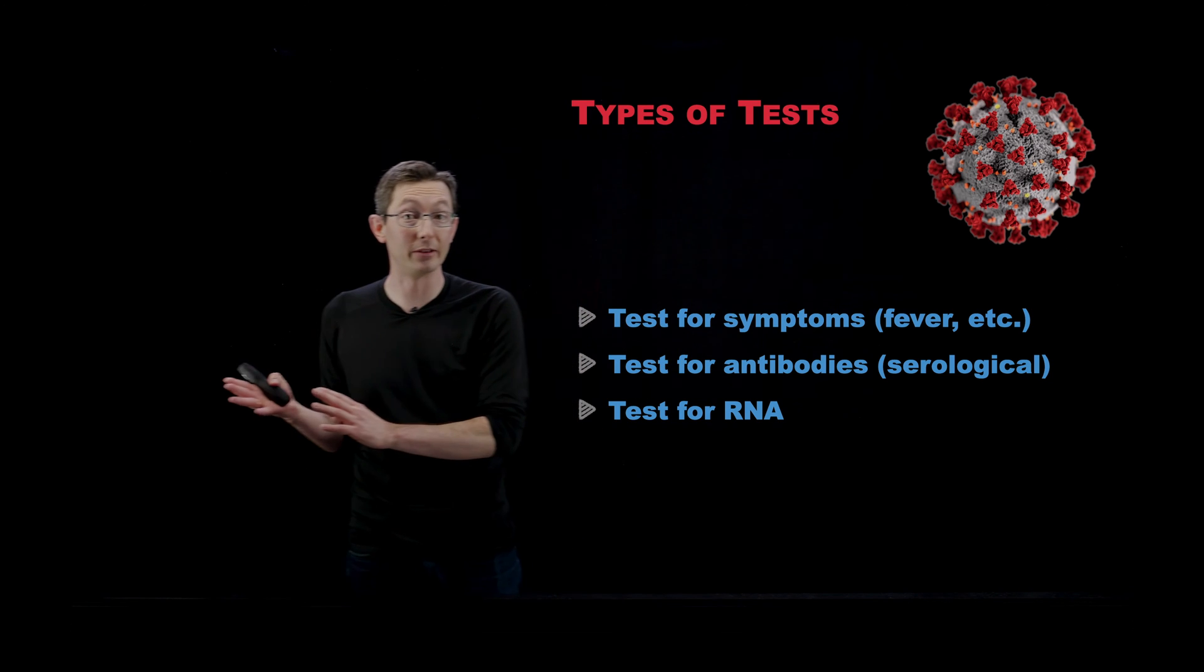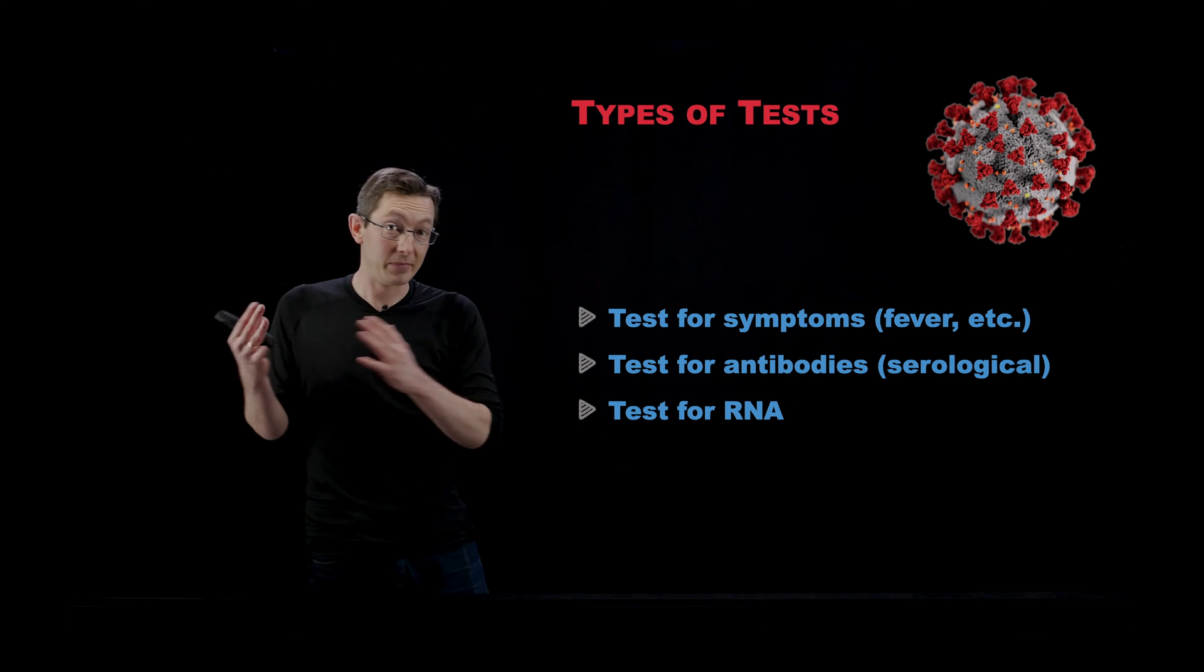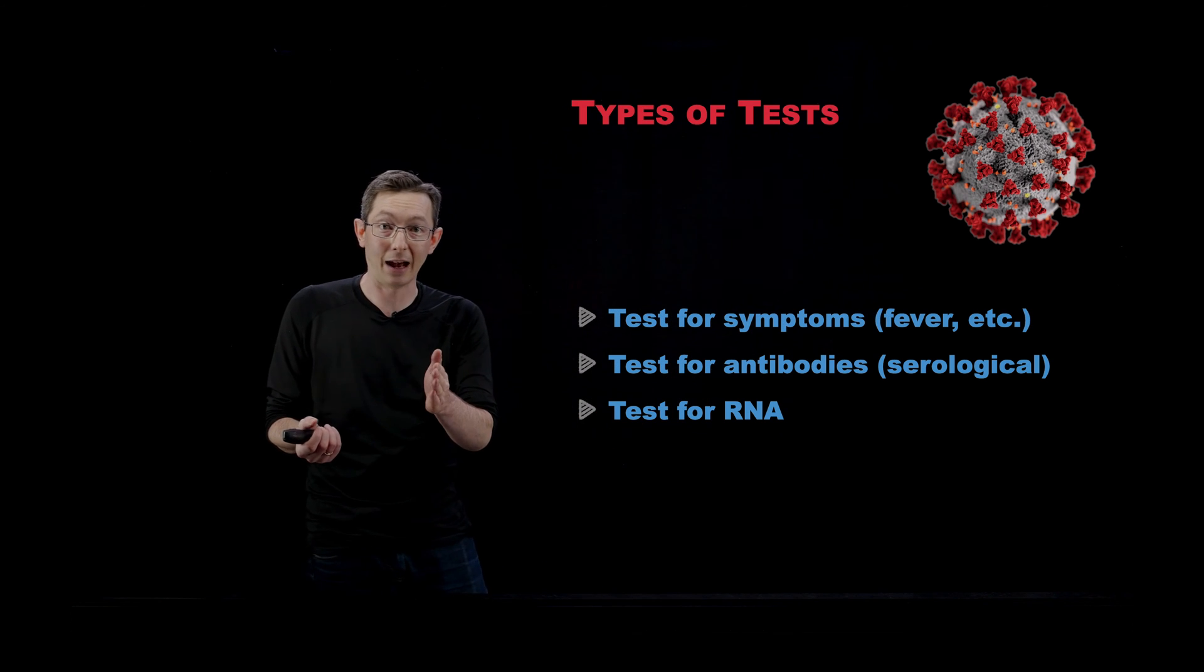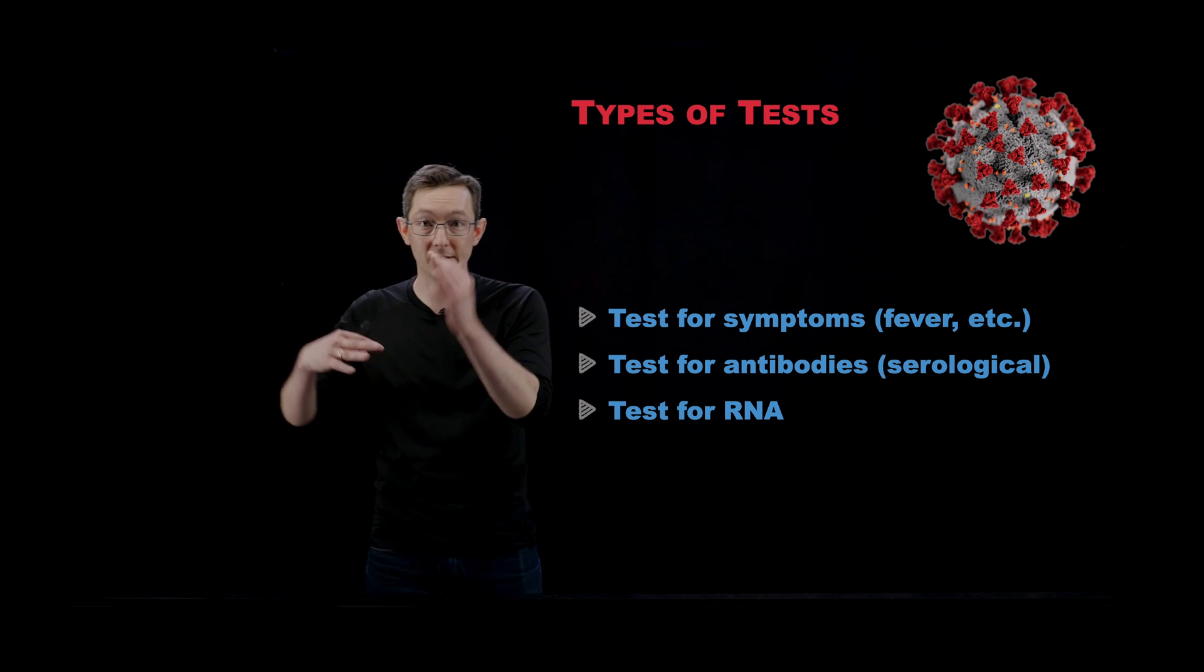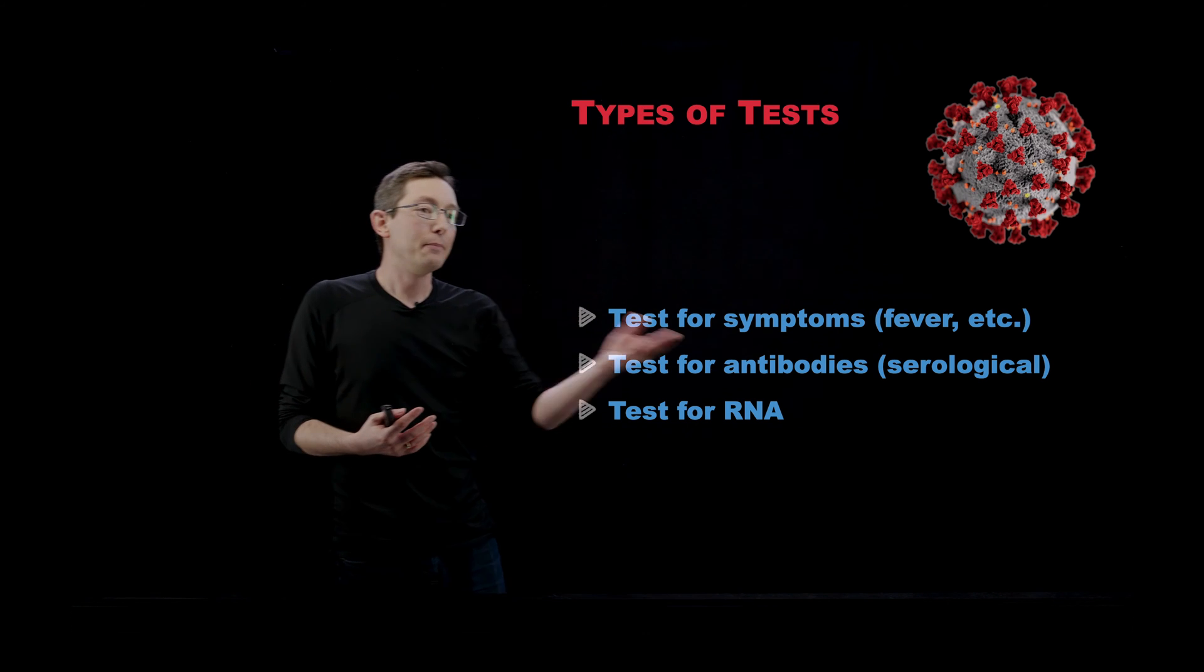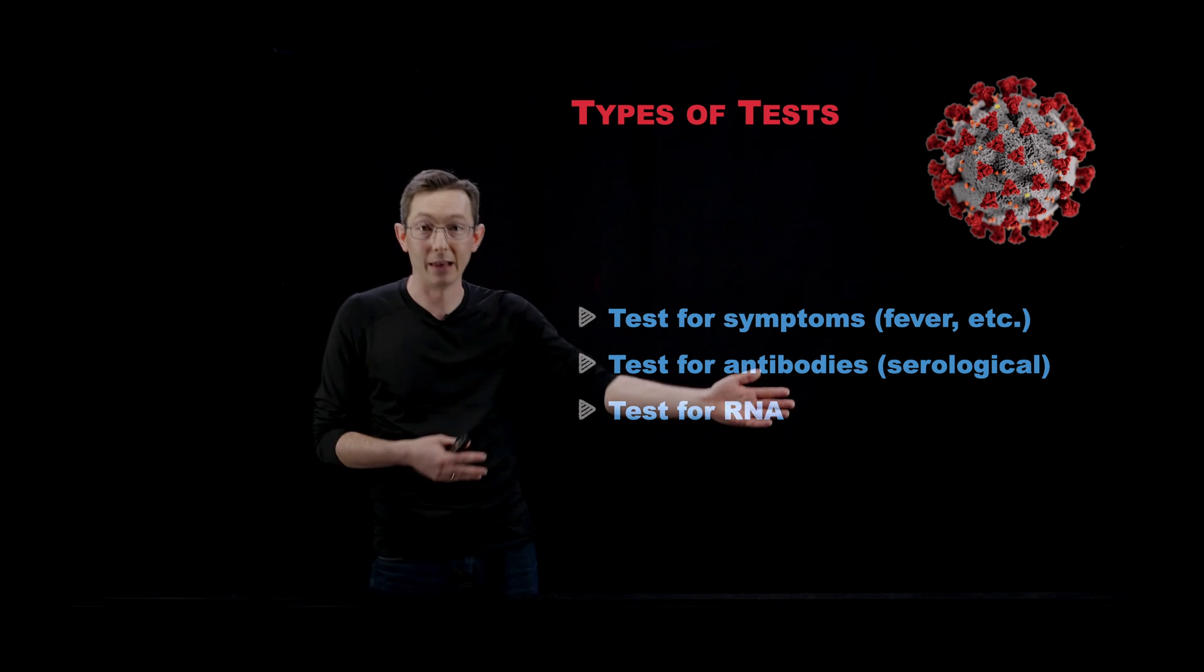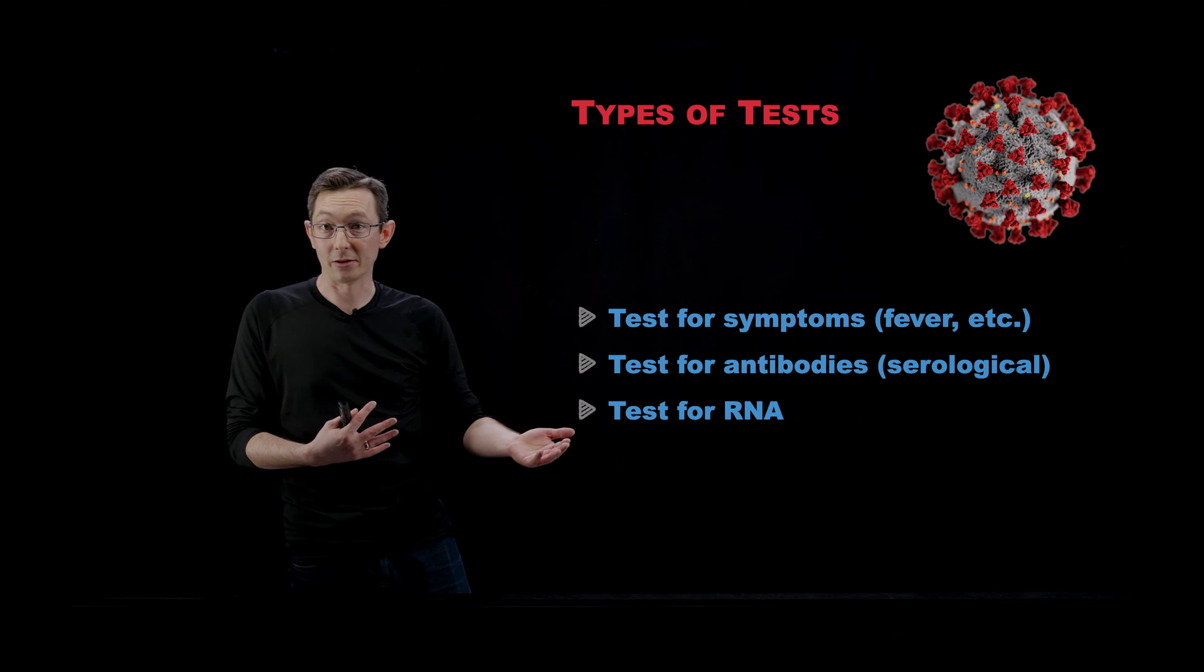Some of these are faster and some are slower than others. For example, in some Southeast Asian countries, there are apps on your phone. You take your fever twice a day and enter those numbers into this app and it goes into a central database so they can track the progression of symptoms over time. So symptoms might be really fast to measure. Antibodies and RNA, those take longer. You have to measure some swab and send it to a lab and maybe there's a queue. So there are different time delays for these different measurements.